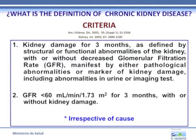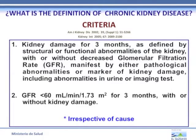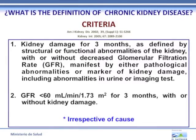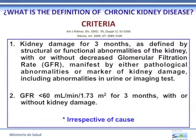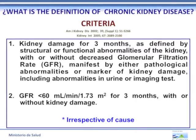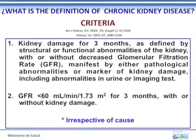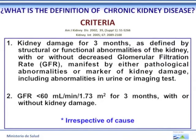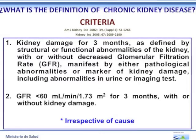What is chronic kidney disease? By definition it requires the following criteria: kidney damage for three months, defined by structural or functional abnormalities of the kidney with or without decreased glomerular filtration rate, manifest by either pathological abnormalities or markers of kidney damage including abnormalities in urine or imaging tests. Or GFR less than 60 ml per minute for three months, with or without kidney damage, irrespective of cause.